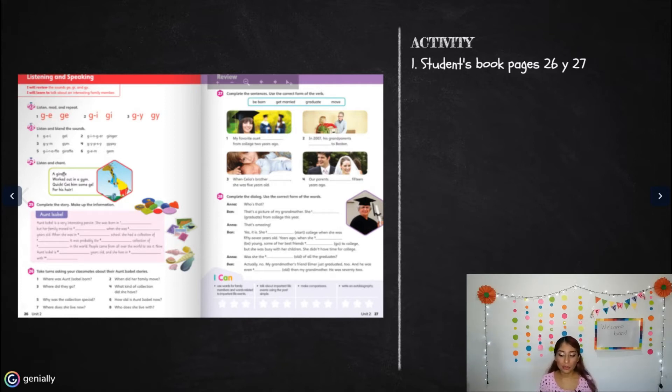On that same page we have activity 25 and it says complete the story, make up the information. Make up means that you are going to imagine, you are going to invent a story by writing the words that you want to. For example, it says Ann Elie Isabel. It says she's a very interesting person. She was born in...